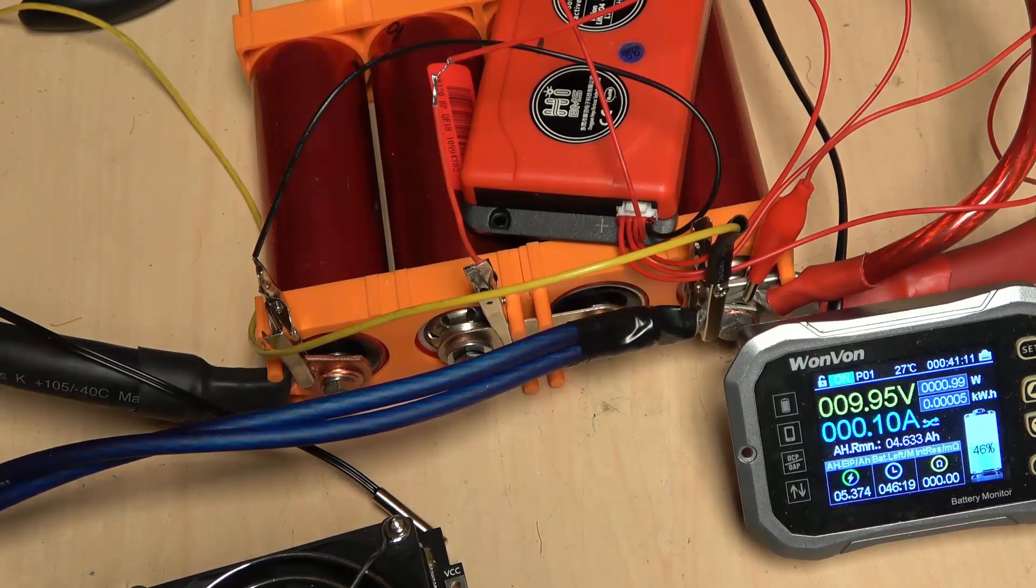So there we go. We have 5.367 amp hours and I do have the discharge curve that I will be able to show you shortly.